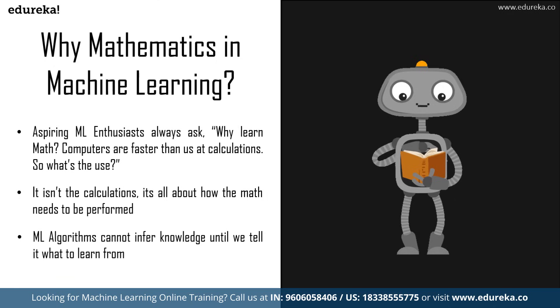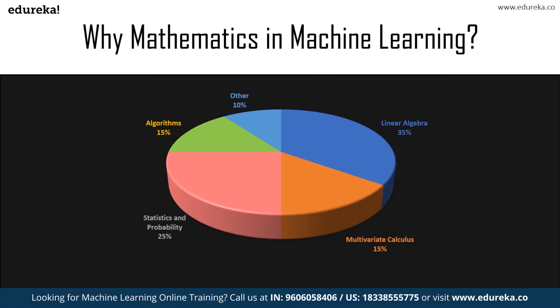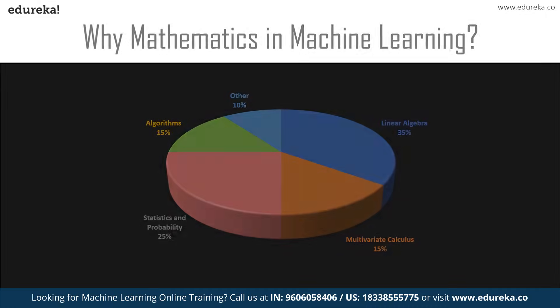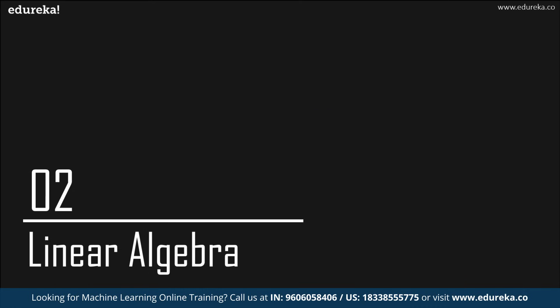So what math do we need for machine learning? Here is a pie chart comprising all the needed math. Linear algebra covers a major part, followed by multivariate calculus. Statistics and probability also play a big role, and you need knowledge of algorithms and much more. This is the requirement to master machine learning. Now that we have developed this understanding, let's do some math.